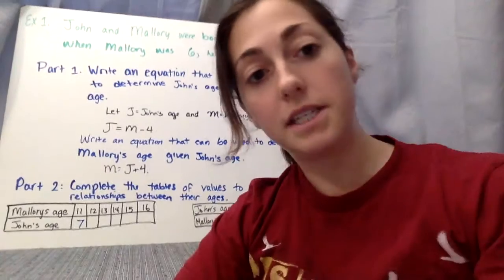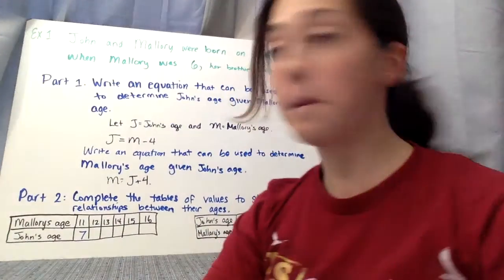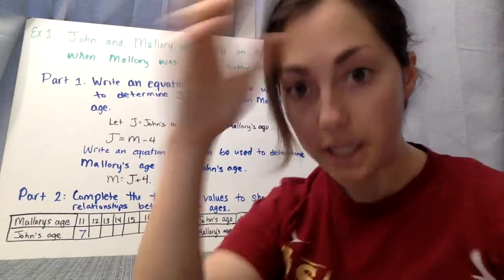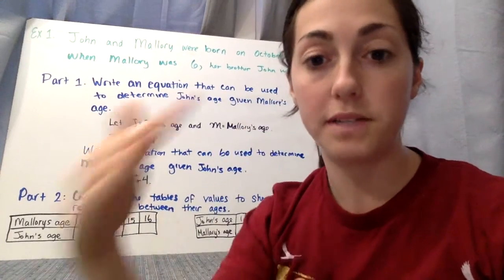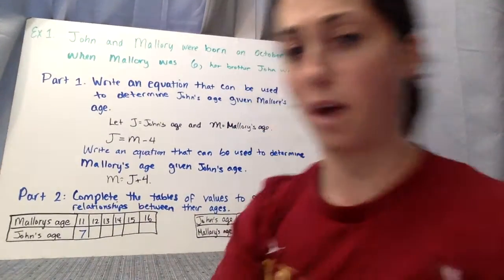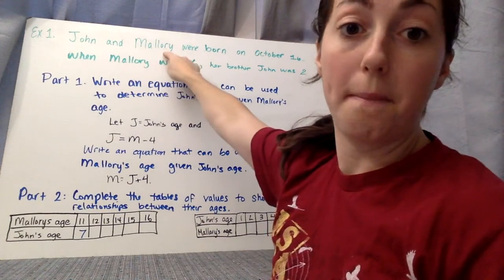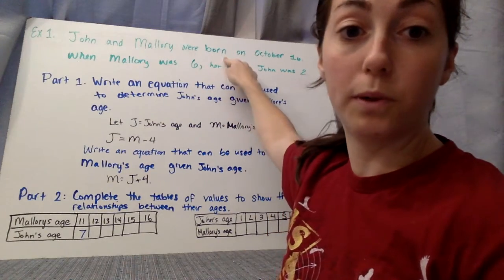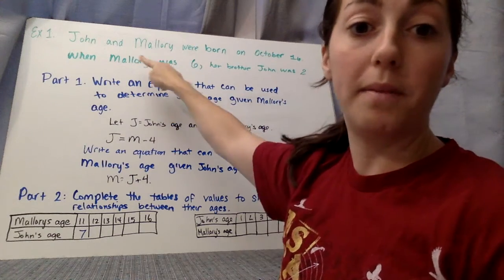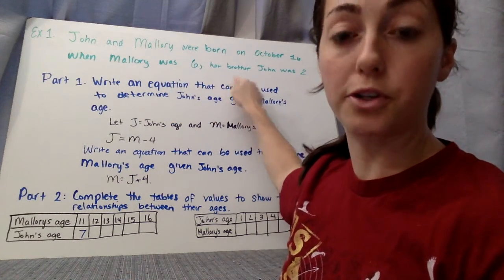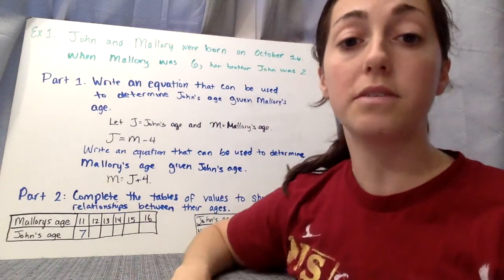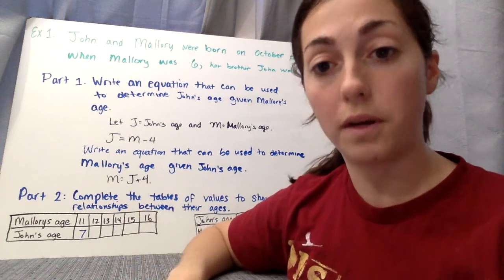Okay, so here's an example. I want you to write this example down, and then we'll talk about each part at a time. You're going to pause the video each time we stop. Example 1. John and Mallory were born on October 16th. When Mallory was 6, her brother John was 2. So copy that down just so you have it, and then we're going to start talking about the problem.